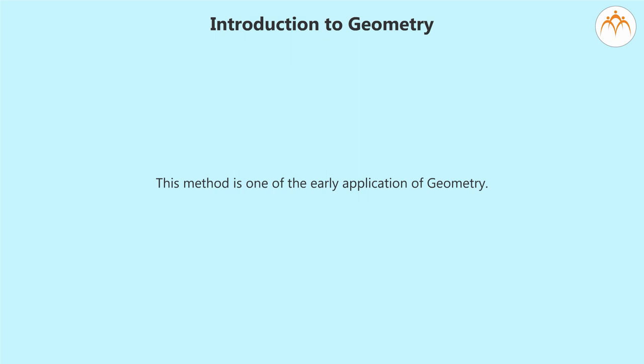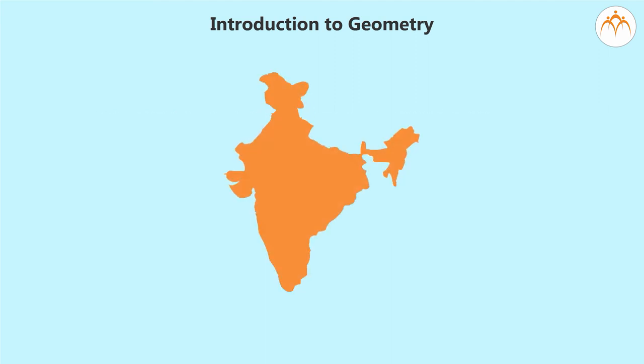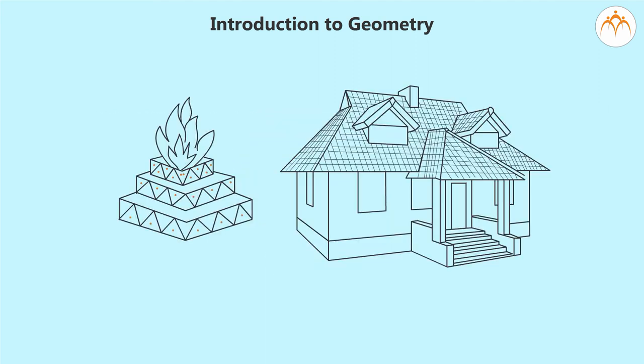This method is one of the early application of geometry. The word geometry itself is formed from 'metri', that is measuring, 'geo', that is earth. In India, for yadnya or building houses, the precisely drawn figures were required. Thus drawing a quadrilateral whose sides are in a given proportion was practiced. Naturally geometry was developed.